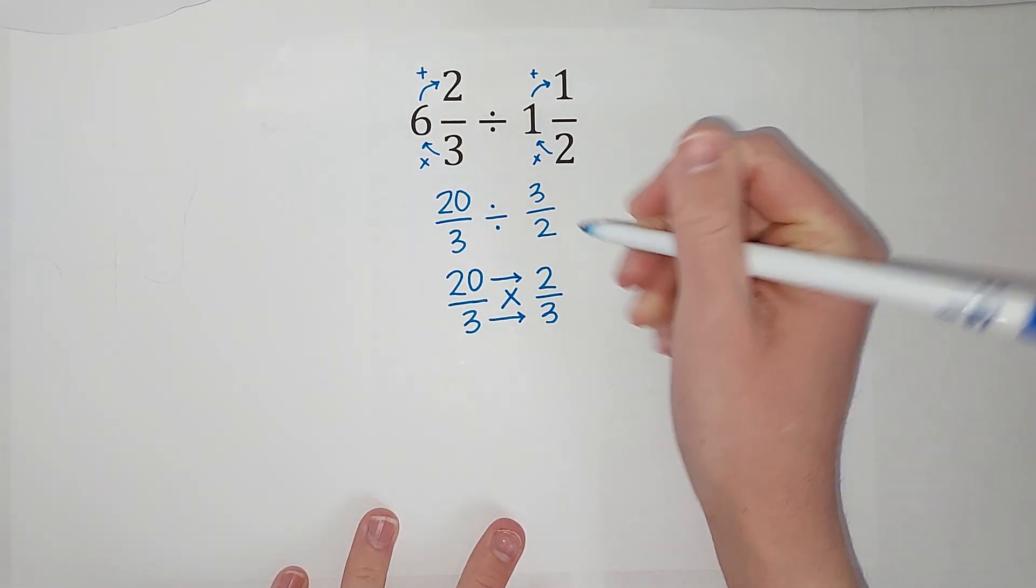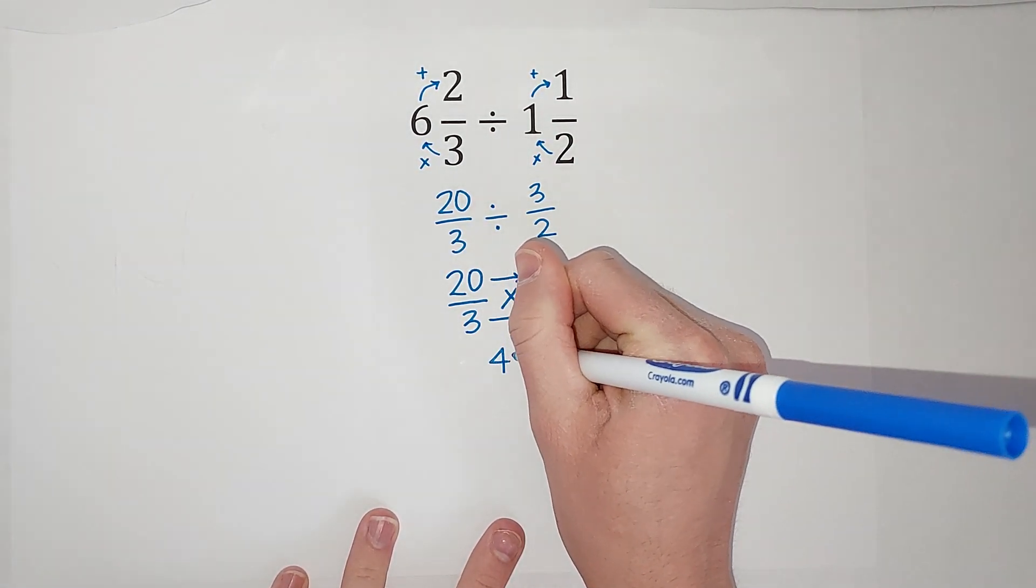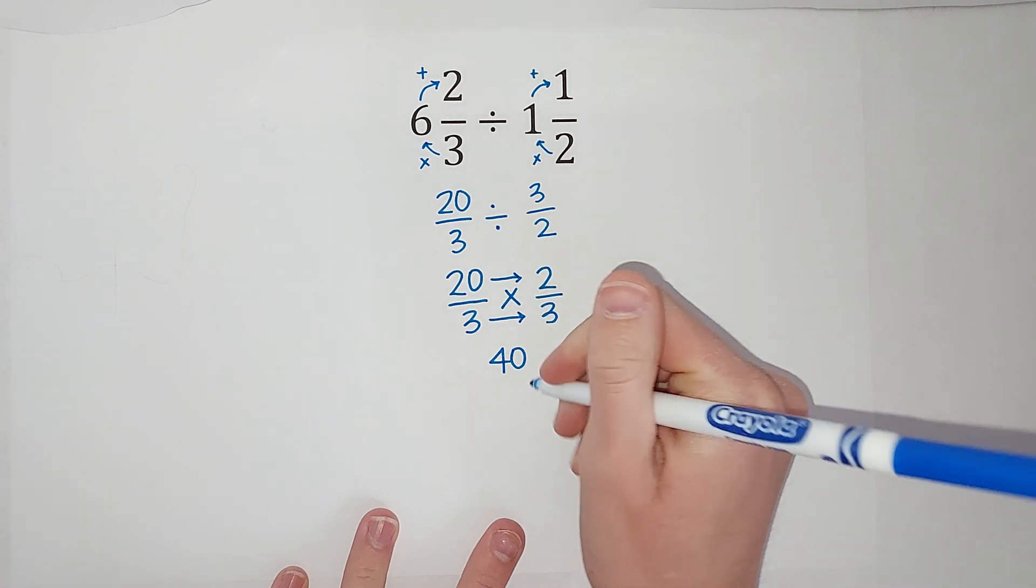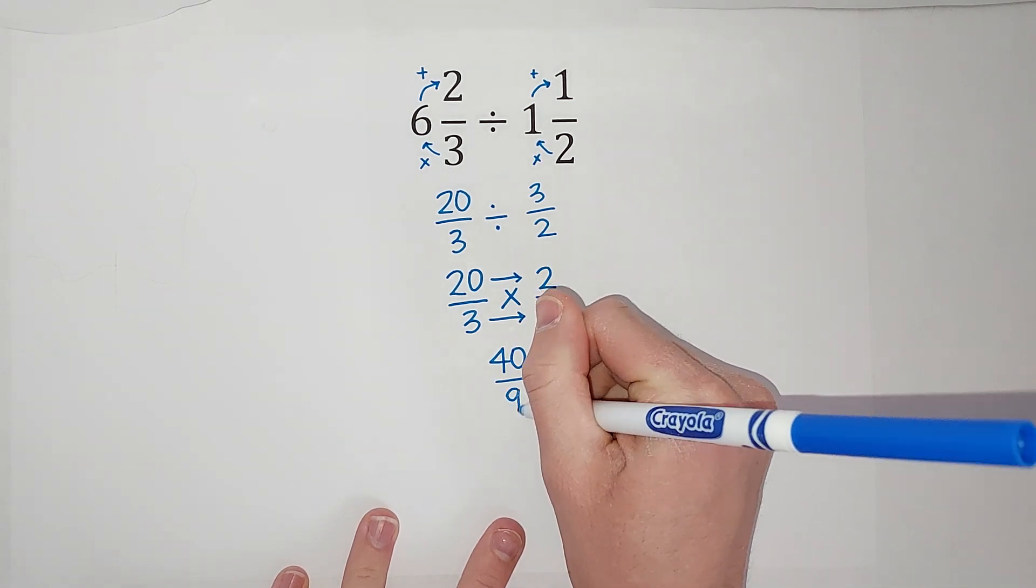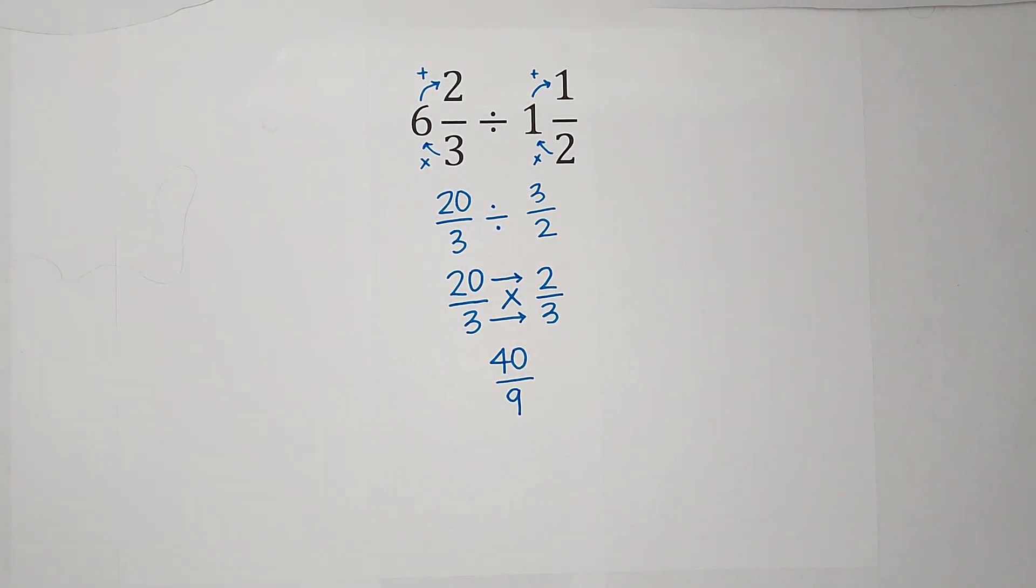So twenty times two gives me forty. Three times three gives me nine. So we are left with forty-ninths.